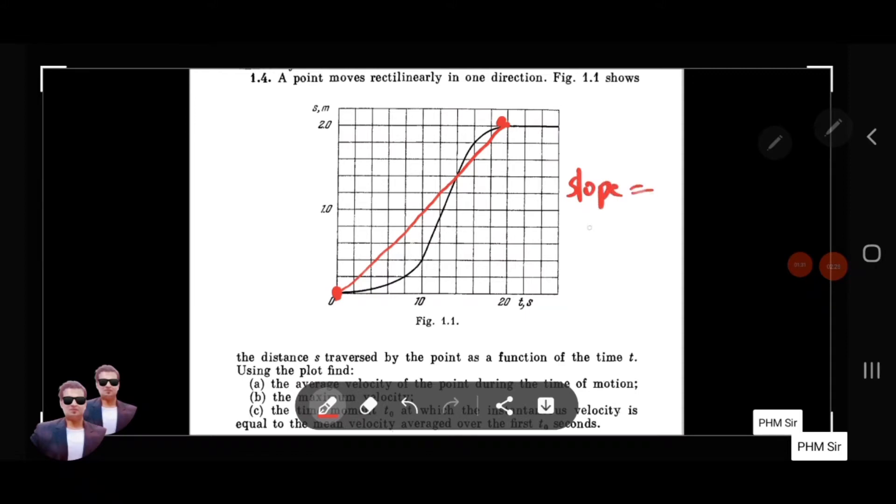The slope formula is Y2 minus Y1 upon X2 minus X1. If you look at the points, this point is at 20 seconds with y-value 2.0, and the starting point is at 0 seconds with y-value 0.0. When I substitute this, I get 2.0 minus 0.0 upon 20 minus 0, which is simply 1 by 10, or 2 by 20, which equals 0.1 meter per second.